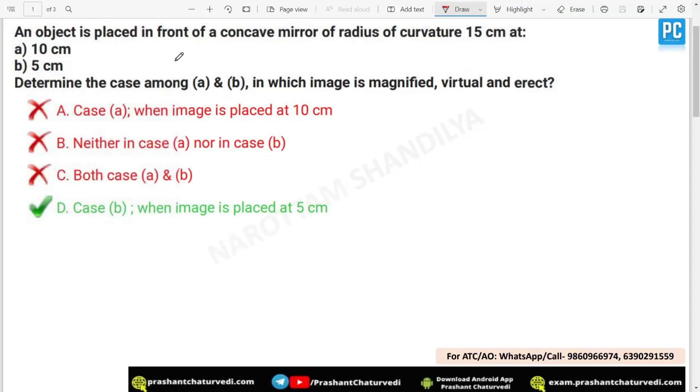The question is telling you an object is placed in front of a concave mirror of radius of curvature. The radius of curvature has been given to you, denoted as capital R. This is the object distance, that means U. These two values have been given to you, and they asked you to determine the case among A and B in which the image is magnified, virtual and erect.